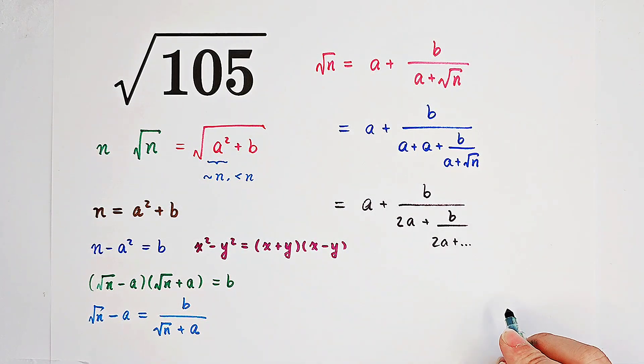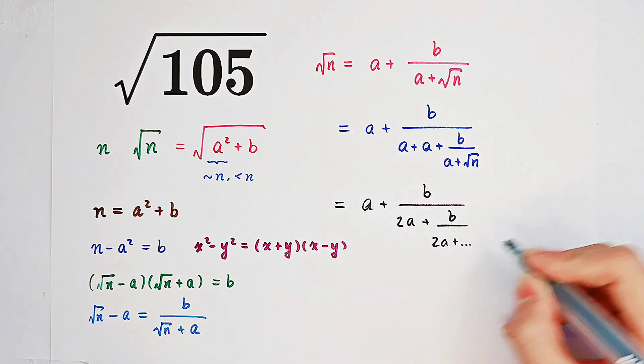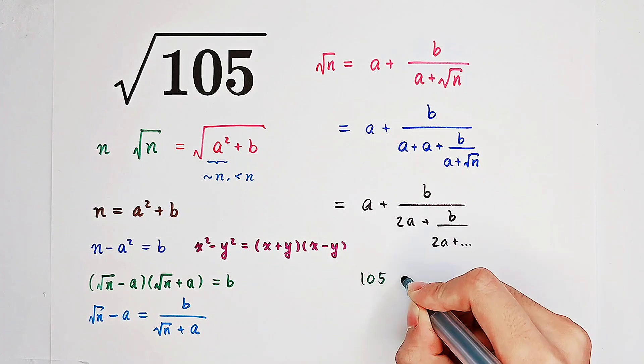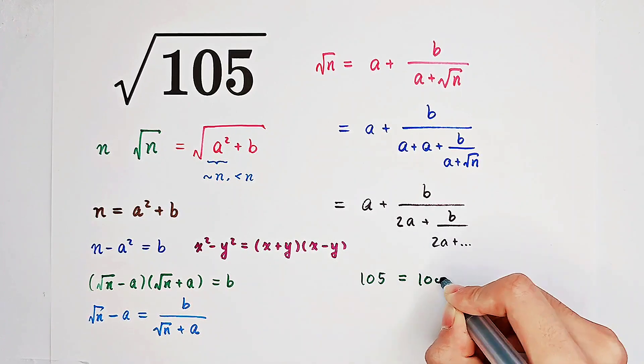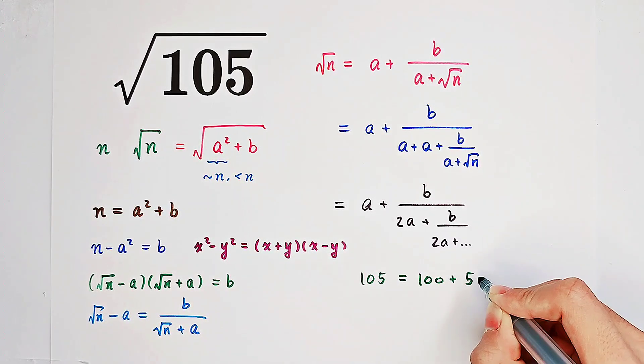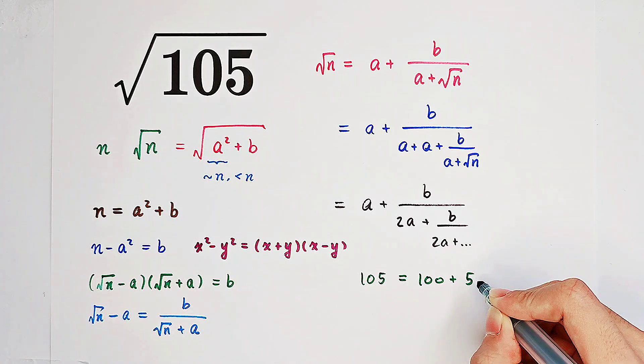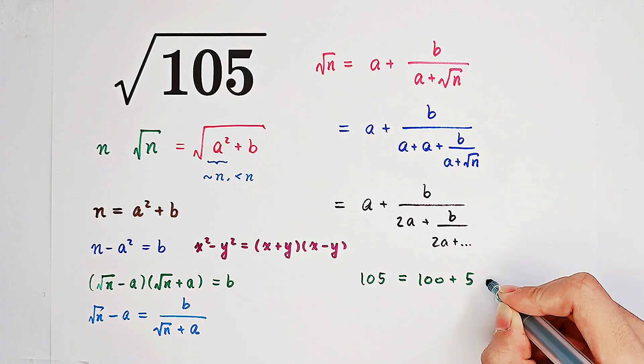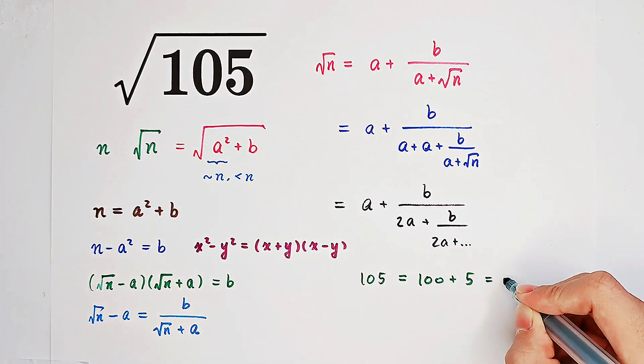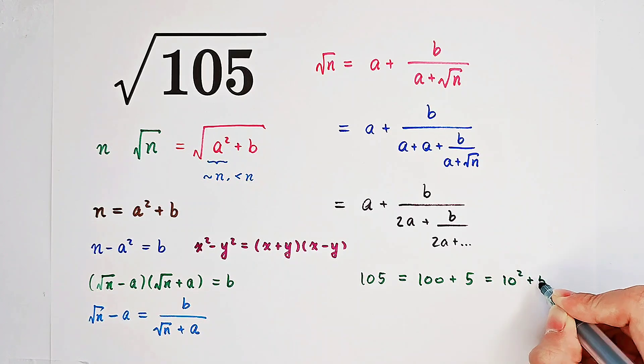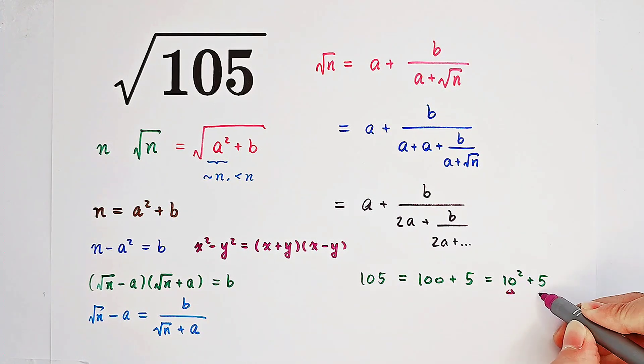Our n is just 105. So if 105 is n, what is a and b? You know that 105 is 100 plus 5. And 100 is indeed the closest perfect square to 105, which is also less than it. So it is 10 squared plus 5. That means our a is 10, our b is 5.